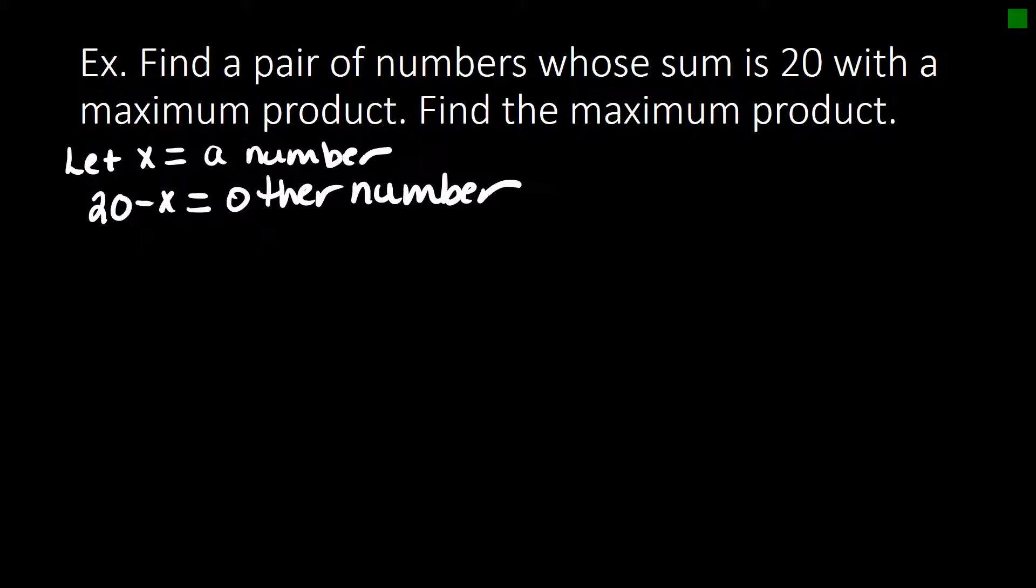It says that they have a maximum product. So the product of these two numbers, x times 20 minus x is negative x squared plus 20x. So they want us to find the maximum product. Well, in order to do that, we need to find what the vertex is or what that maximum point is.